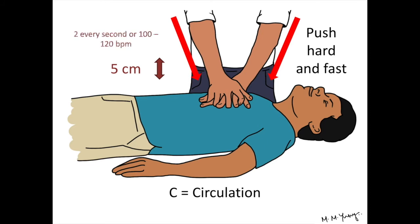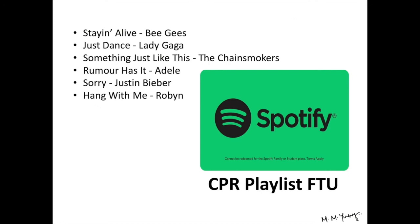Fast means you need to push every two seconds, or at 100 to 120 beats per minute. Here are a few songs that are at 100 to 120 beats per minute — you can time your compressions to their beat. Follow the CPR playlist we made on Spotify to make sure you always have some CPR tracks on hand.